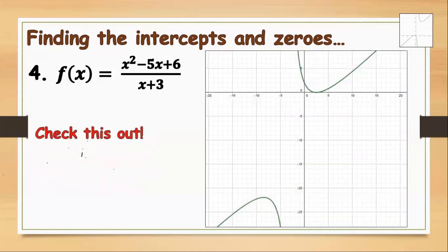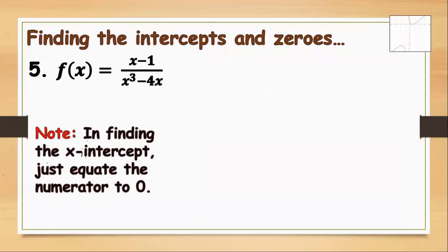Let's check the graph. Our x-intercepts are positive 2 and positive 3, and our y-intercept is positive 2. Now for the last example: f(x) equals x minus 1 all over x cubed minus 4x. Let's find the x-intercept by equating the numerator to 0, so x equals positive 1.